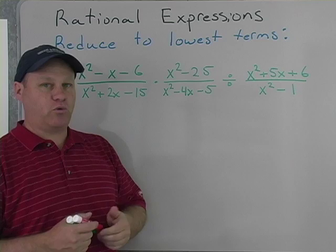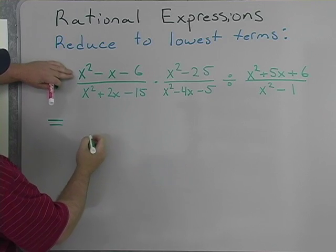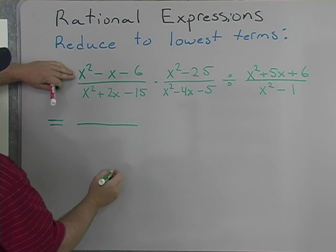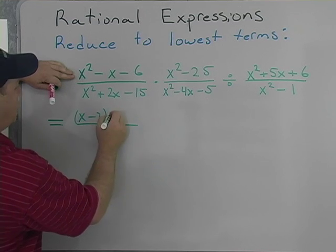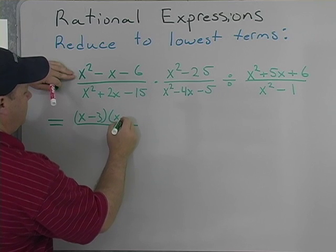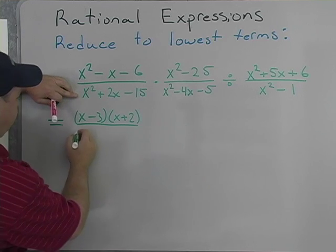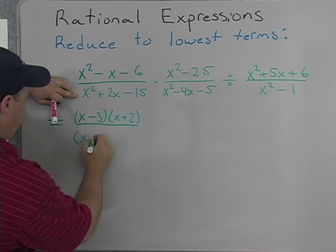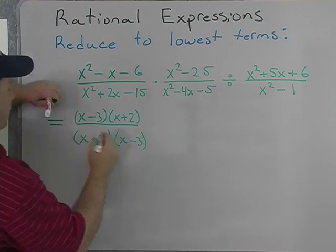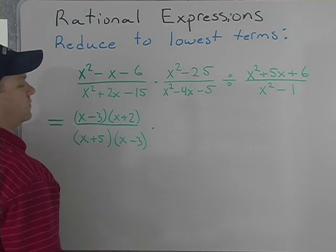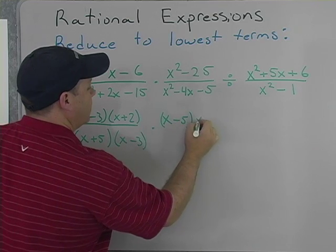So this one's going to be a little more difficult and involved, but let's see what we have here. Everything's going to factor. I'm going to factor this numerator of the first expression as x minus 3 times the quantity x plus 2. The denominator is going to factor into x plus 5 times the quantity x minus 3. Right here, we have the difference of two squares. That's going to be x minus 5 times the quantity x plus 5.